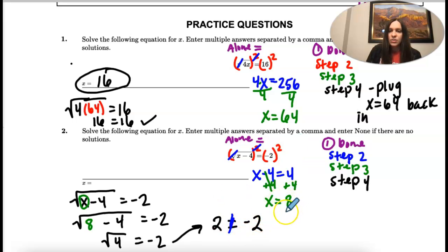So that means x equals eight is extraneous because I plugged them back in. I plugged in this solution, and I didn't get what I was supposed to get. I should have got negative two. So if there are no solutions or an extraneous solution, you would type in none.